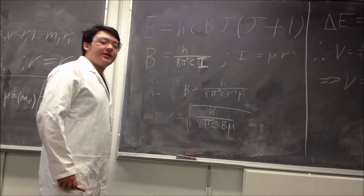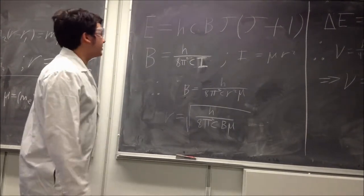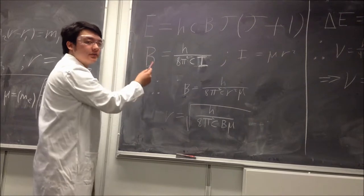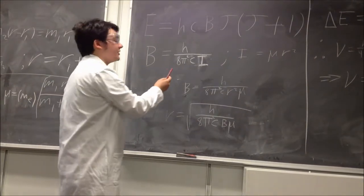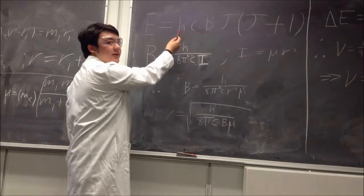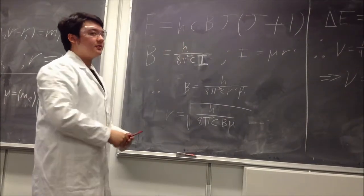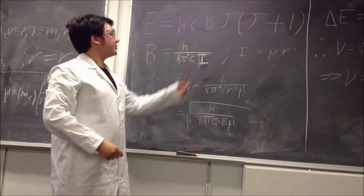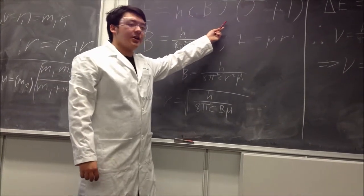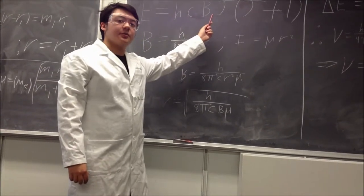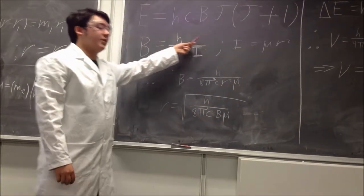We can analyze the energy of a diatomic model using this equation for energy here. Rotational energy equals H, which is Planck's constant, multiplied by C, the speed of light, multiplied by B, the rotational constant, multiplied by J, the angular momentum quantum number. Note this rotational constant.